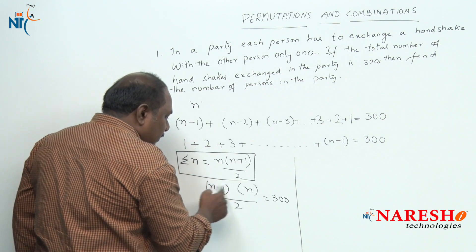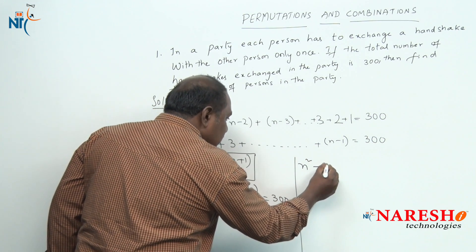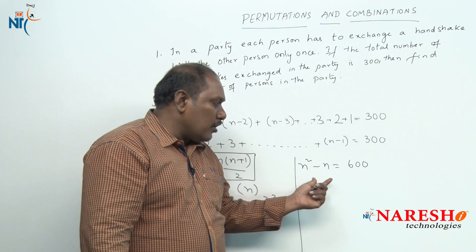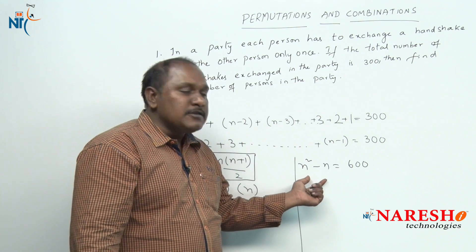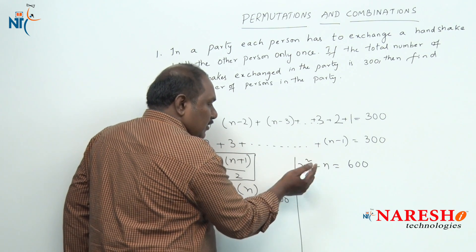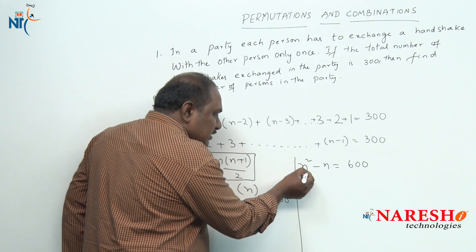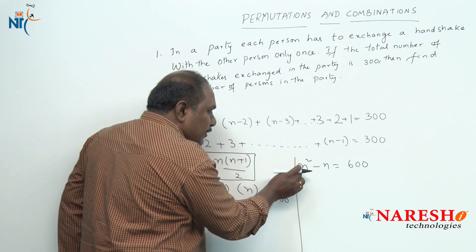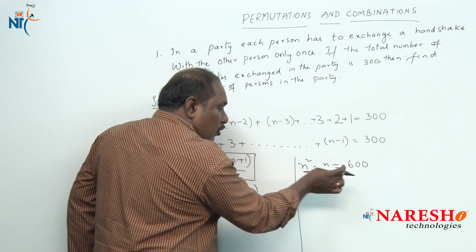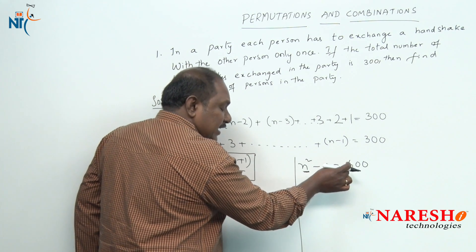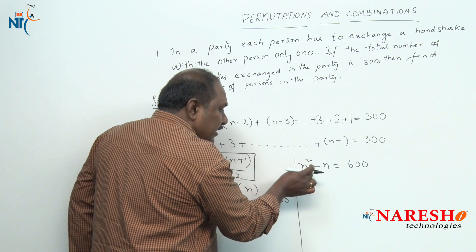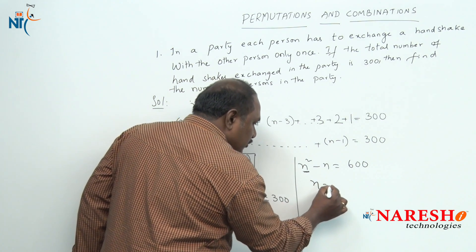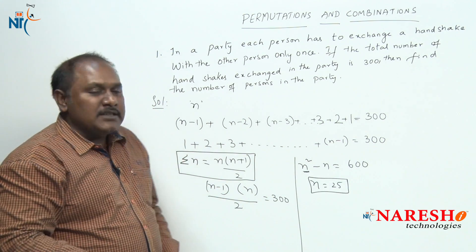Solving this, we get n² - n = 600. Now, n must be a whole number, so n² must be a perfect square greater than 600. The nearest perfect square greater than 600 is 625, which is 25². Checking: 25² - 25 = 625 - 25 = 600. So n = 25, meaning there are 25 persons in the party.